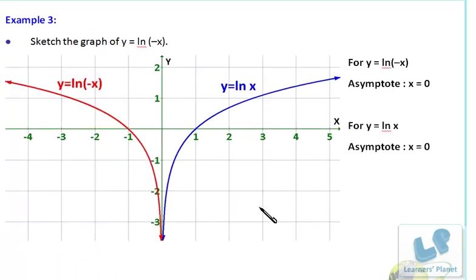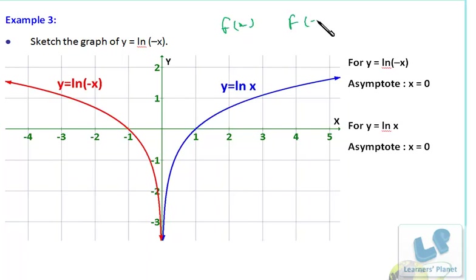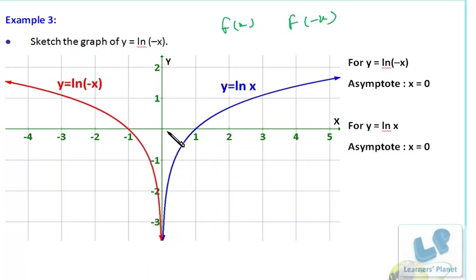Similarly, this is the graph of log(x). Now x is converted to -x, so you just have to take the mirror image of this graph. Once you are conceptually clear about how f(x) is converted to f(-x), you can draw any graph. This is log(x) and this is log(-x) — just an inversion along the y-axis, very simple.